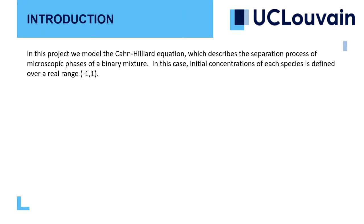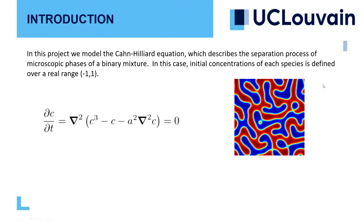First, to solve the Cahn-Hilliard equation, which describes the separation process of microscopic phases of a mixture. In this case, we select a mixture of two species initially with concentrations in a range of minus 1 to 1. For the initial condition, we take a field of 128 by 128, and this is the differential equation which describes the field, the energy coefficients, and it has two Laplacians.